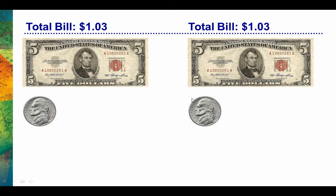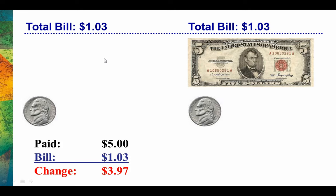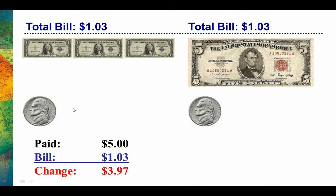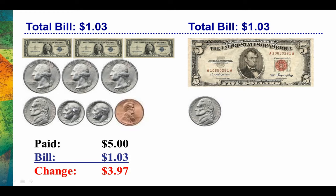Now we'll answer the question posed at the beginning of the video. Let's say a customer's bill is $1.03, and the customer has $5.05 in their wallet. In the first situation, the customer pays with just the $5 bill. If the customer pays $5 for a bill that is $1.03, we owe that customer $3.97 in change. The $5 bill is gone, and now we give them back $3.97: $3, $3.25, $3.50, $3.75, $3.85, $3.95, $3.96, $3.97. Remember, they still have the nickel in their pocket — so this is what they're left with.